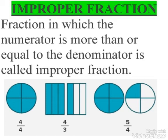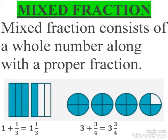Mixed fraction consists of a whole number along with a proper fraction. In the first case, 1 and 1 upon 3: 1 is a whole number and 1 upon 3 is a proper fraction, so 1 and 1/3 is a mixed fraction. In the second case, 3 and 3 upon 4: 3 is a whole number and 3 upon 4 is a proper fraction, so 3 and 3/4 is a mixed fraction.